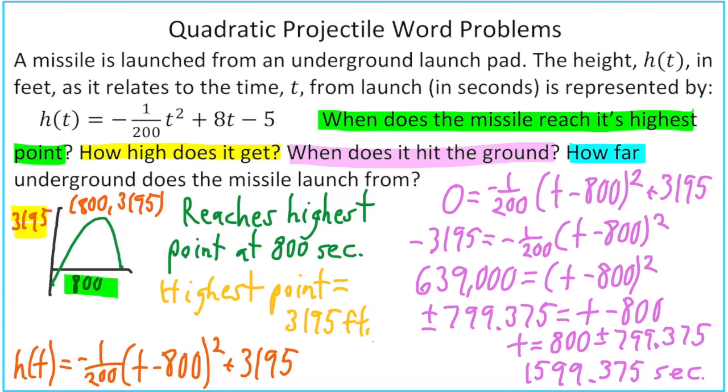Our last question, how far underground does the missile launch from? This is actually the easiest question to answer. We can get this without doing any work at all and looking at our original equation. Because this is basically just letting time equal 0. And if we put 0 in for t, we're left with negative 5 for our height. So that would mean that it launched 5 feet under.